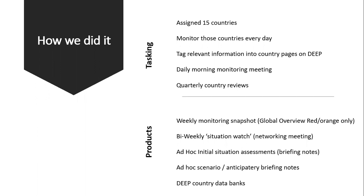One individual analyst was basically assigned 15 countries to monitor. Normally 10 of which were non-crisis countries — they were countries of interest that might have crisis developments occur, whether they had volcanoes, earthquakes, were on hurricane paths, or had some political instability which could escalate. They were just there to keep an eye on. The remaining five countries were usually a mix of red or orange emergencies — stuff like Afghanistan or Yemen were two big ones, and Cox's Bazar was another one on people's radar at that time.